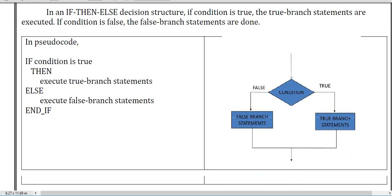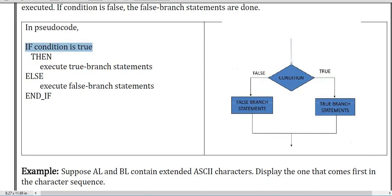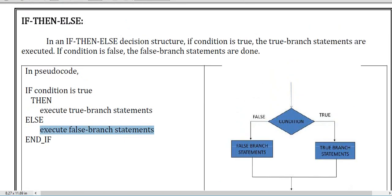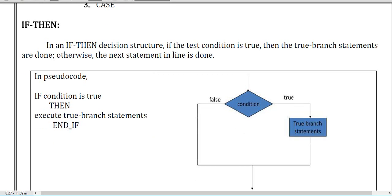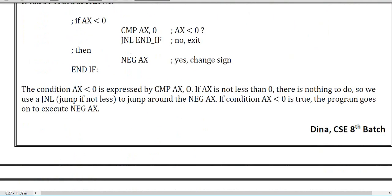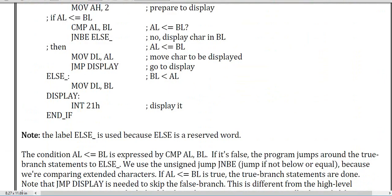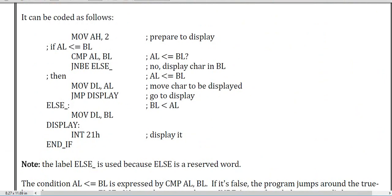If-then-else: for the if condition you have one statement; for the else condition you have another statement. It will first check the if condition — for that it has one instruction — and for else it has another instruction. In the if-then structure there is only one statement for the true condition with no else branch. The code shows: for the if section it has some criteria, and for else it has another.